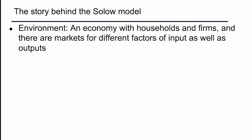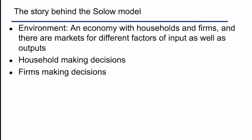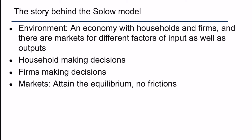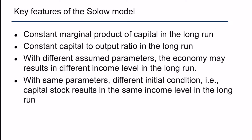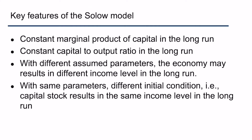Based on this setup, the Solow model has a couple of key features. It has a constant marginal product of capital in the long run, and a constant capital-to-output ratio in the long run. These two features are linked: assuming a Cobb-Douglas production function, the marginal product of capital equals the capital share multiplied by the capital-to-output ratio. Therefore, if the marginal product of capital is constant and the capital share is a fixed parameter, it implies that the capital-to-output ratio must also be constant.